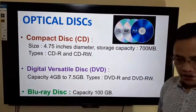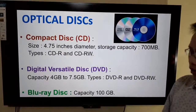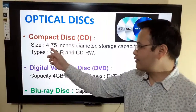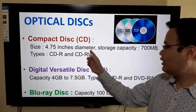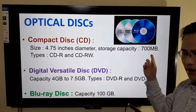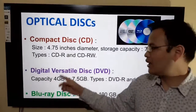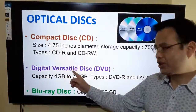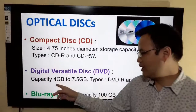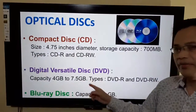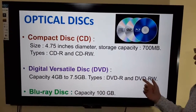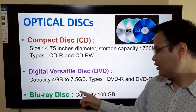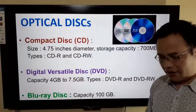Now, optical disks. There are three subtypes of optical disk. First is the Compact Disk (CD): its size is 4.7 inches in diameter, storage capacity is 700 MB, and its types are CD-ROM and CD-R. Second is the DVD (Digital Versatile Disk): capacity ranges from 4 GB up to 7.5 GB, with types DVD-ROM and DVD-R. Third is the Blu-ray disk, with a capacity of 100 GB.